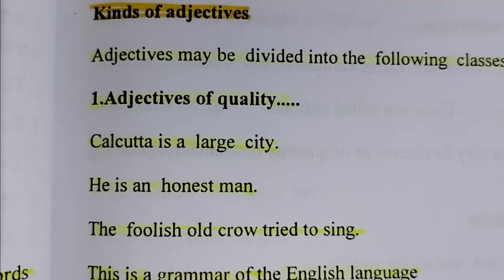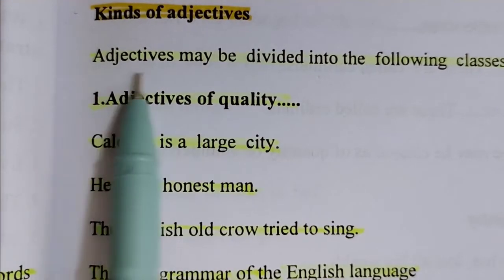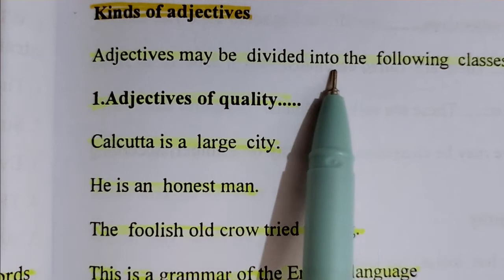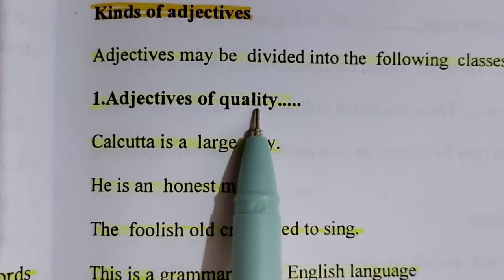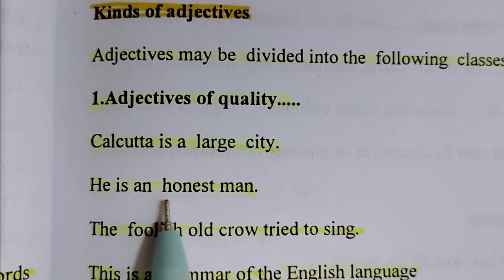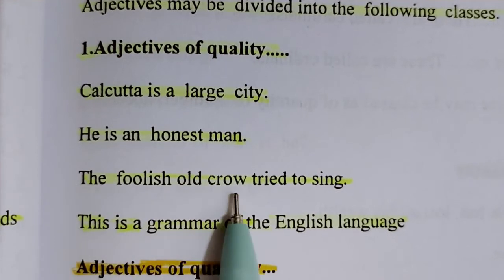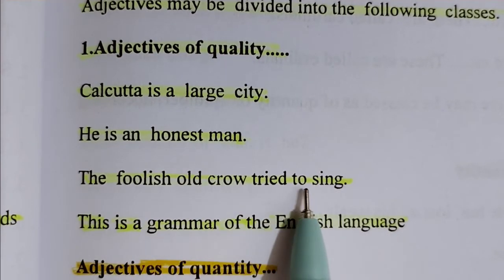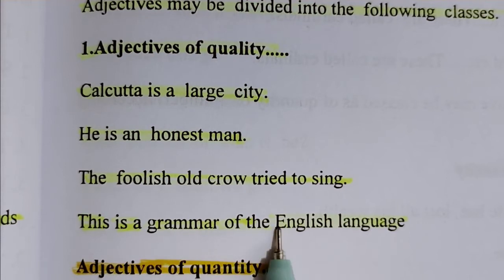Hello students, today I'm going to teach you about kinds of adjectives. Adjectives may be divided into the following classes. Adjectives of quality: 'Kolkata is a large city,' 'He is an honest man,' 'The foolish old crow tried to sing,' 'This is a grammar of English language.'